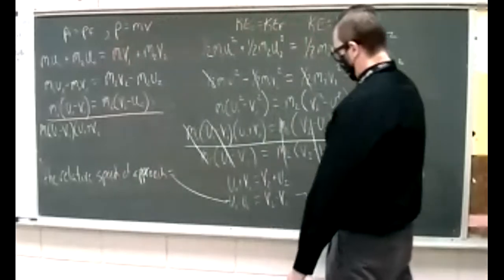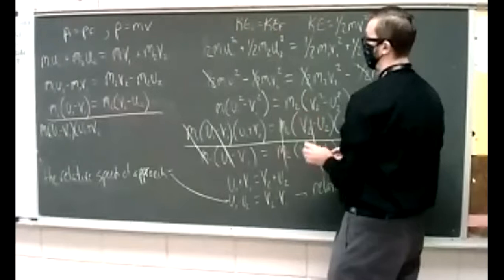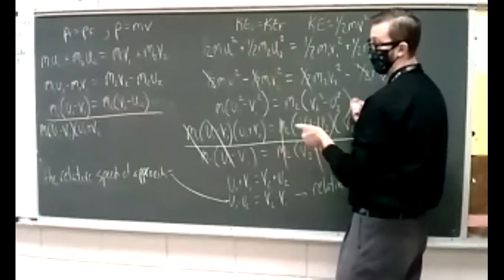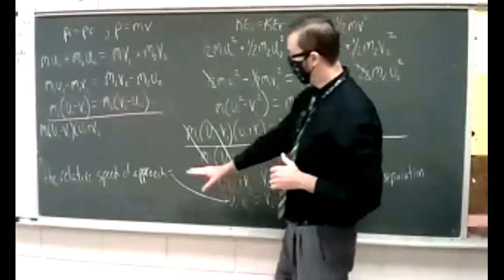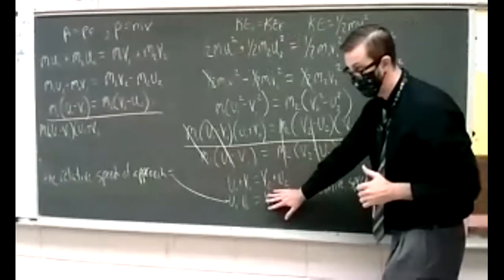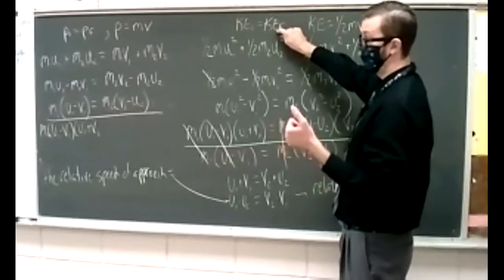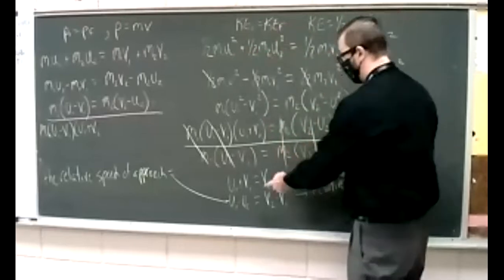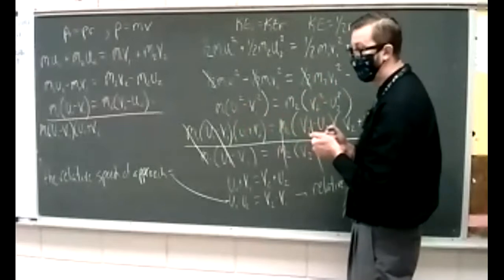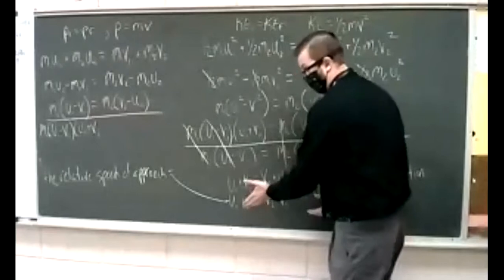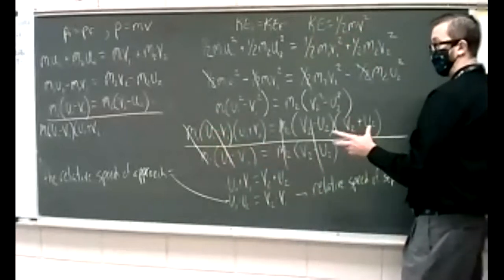This idea is more useful and more convenient than going through the full kinetic energy calculation. If you're analyzing a situation with perfect elasticity, you could sum all the kinetic energies — but it's often much more useful to just say: the relative speed of approach equals the relative speed of separation. If you can show that's true, you've proven it's perfectly elastic.